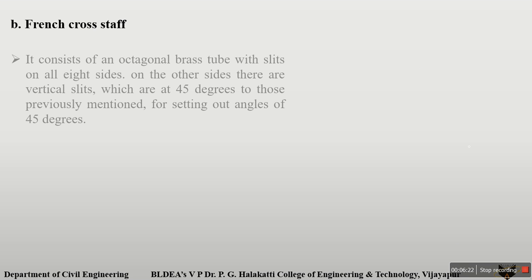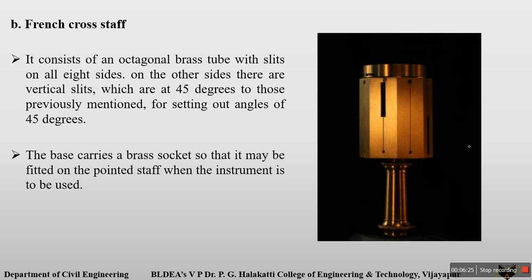The next one is the French cross staff. This is the image of the French cross staff. It is in the shape of an octagonal brass tube. It has vertical slits made on all surfaces in alternative directions. It is also one of the instruments used for erecting perpendicular offsets.